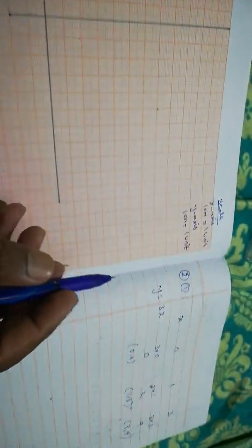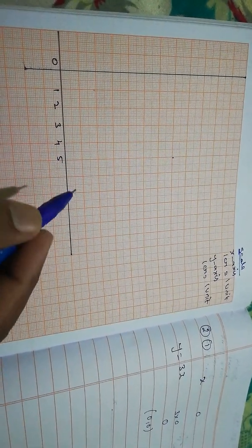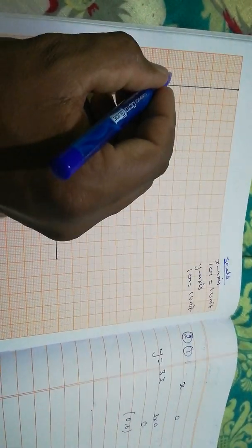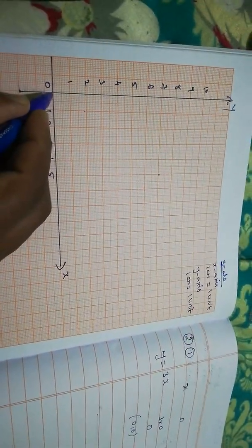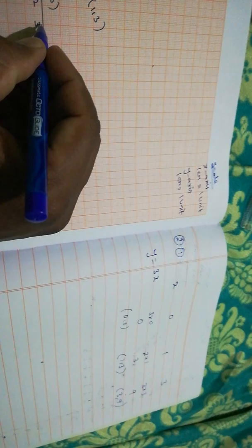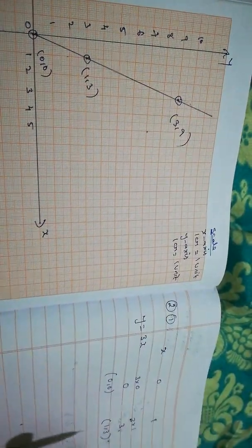Now draw the graph. On the x-axis mark 0 to 5, and on the y-axis mark 1 through 10. Plot (0,0), (1,3), and (3,9). Join these points and draw the line. Label it y = 3x.